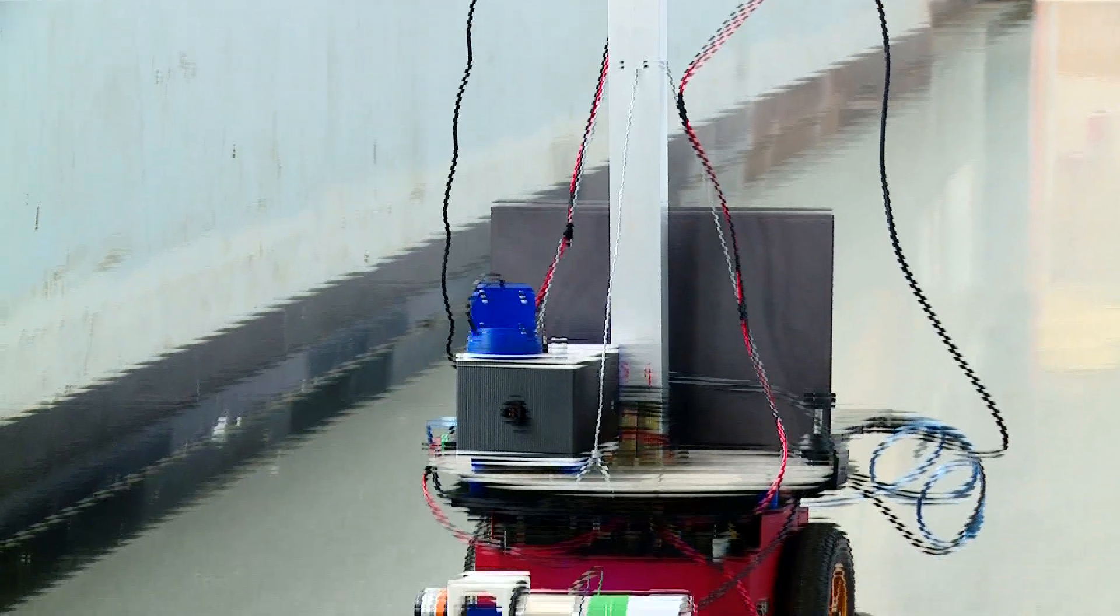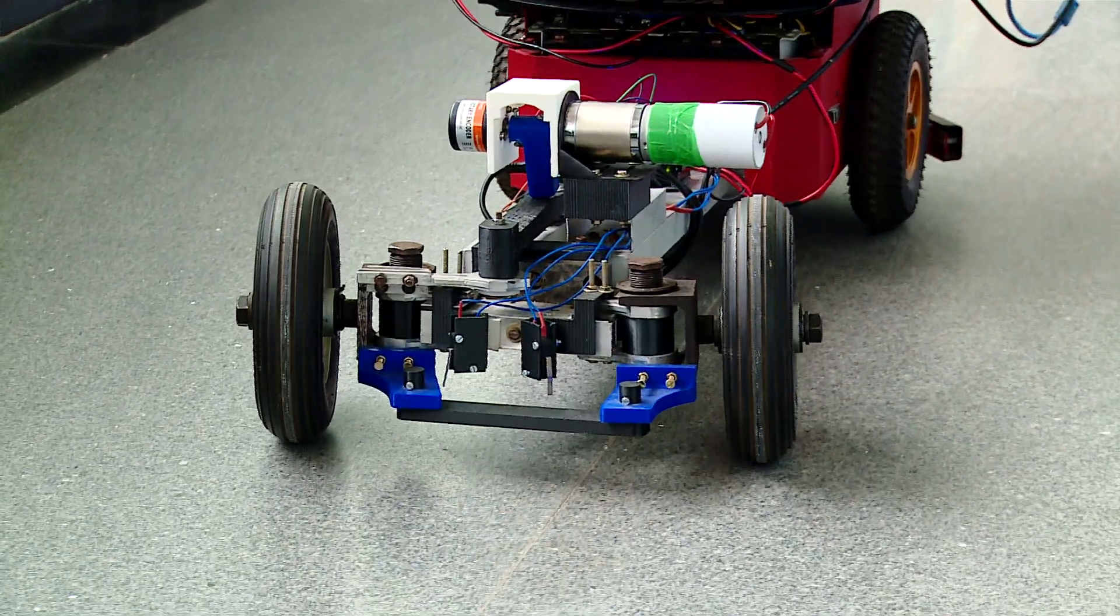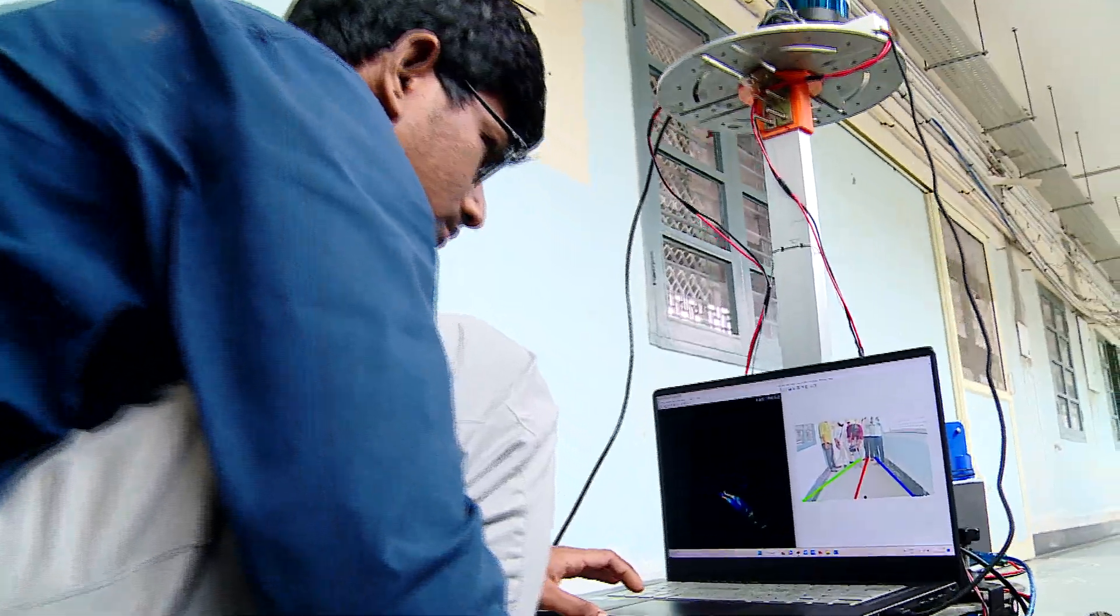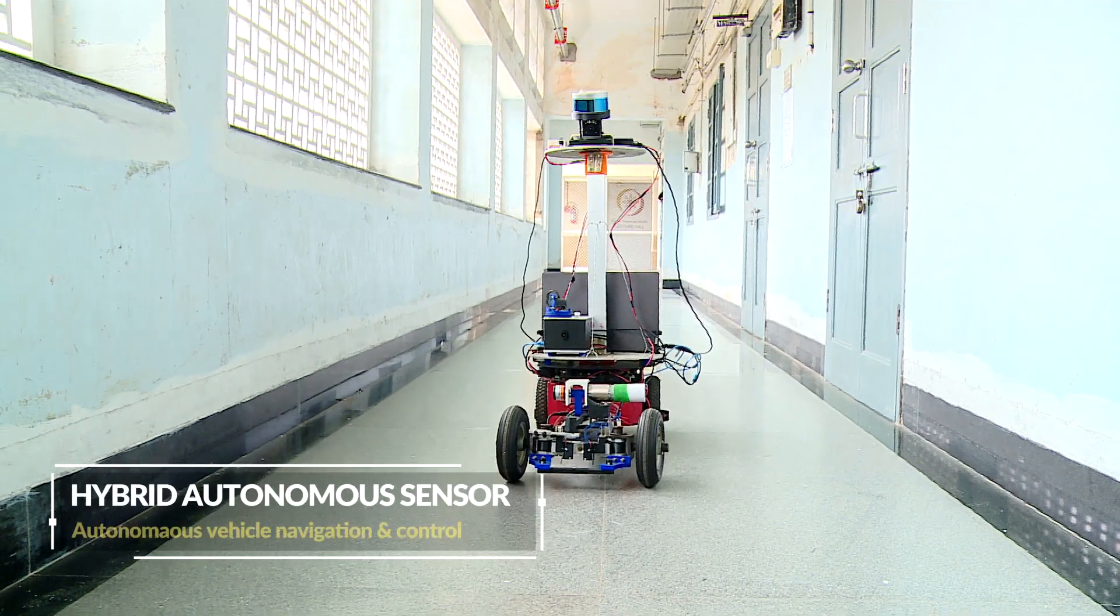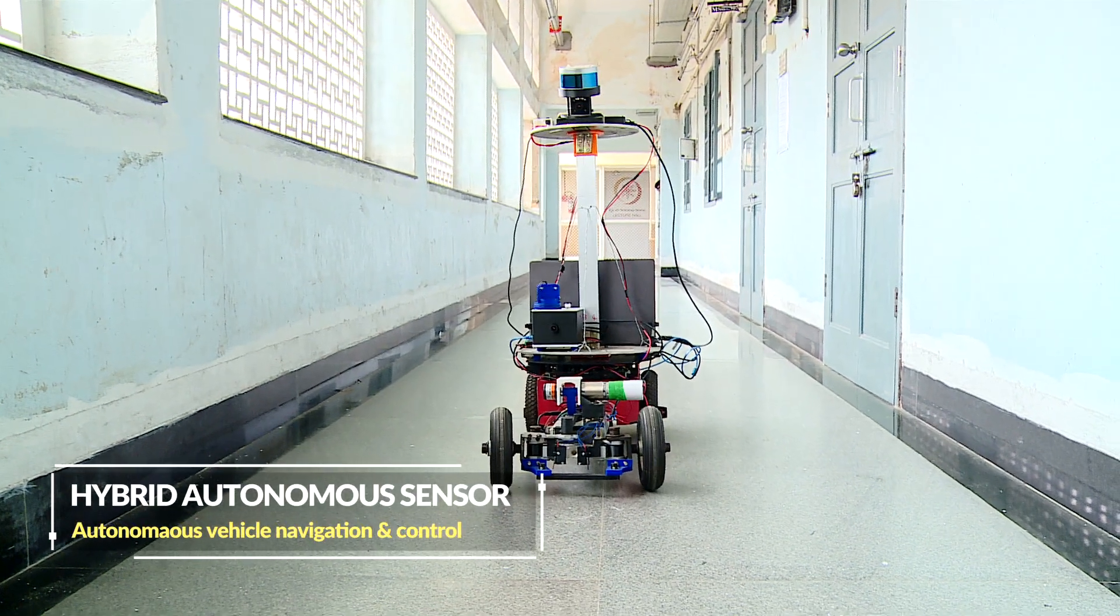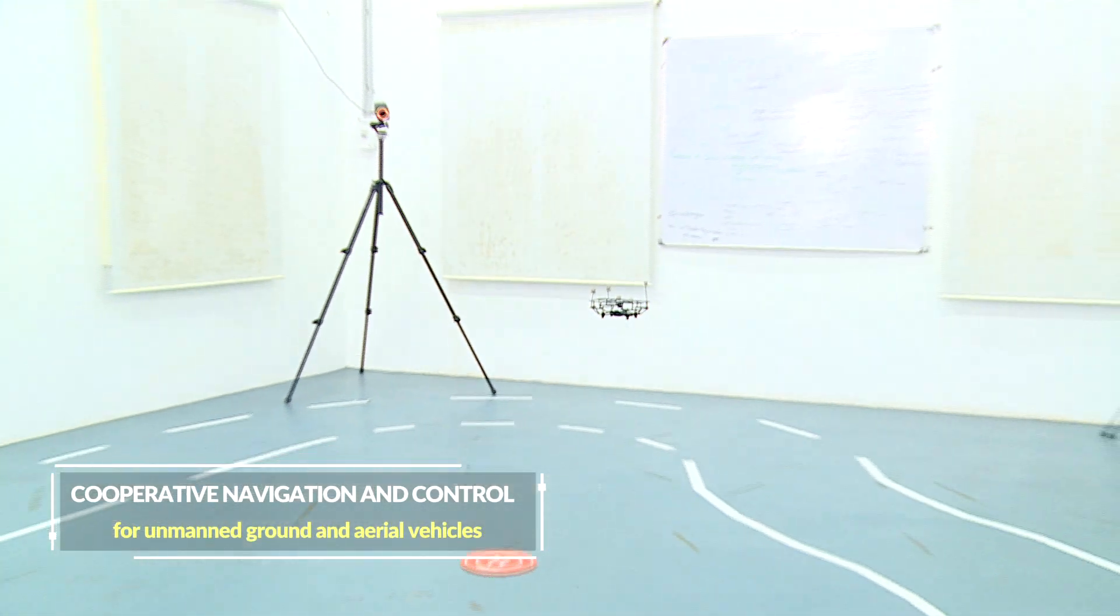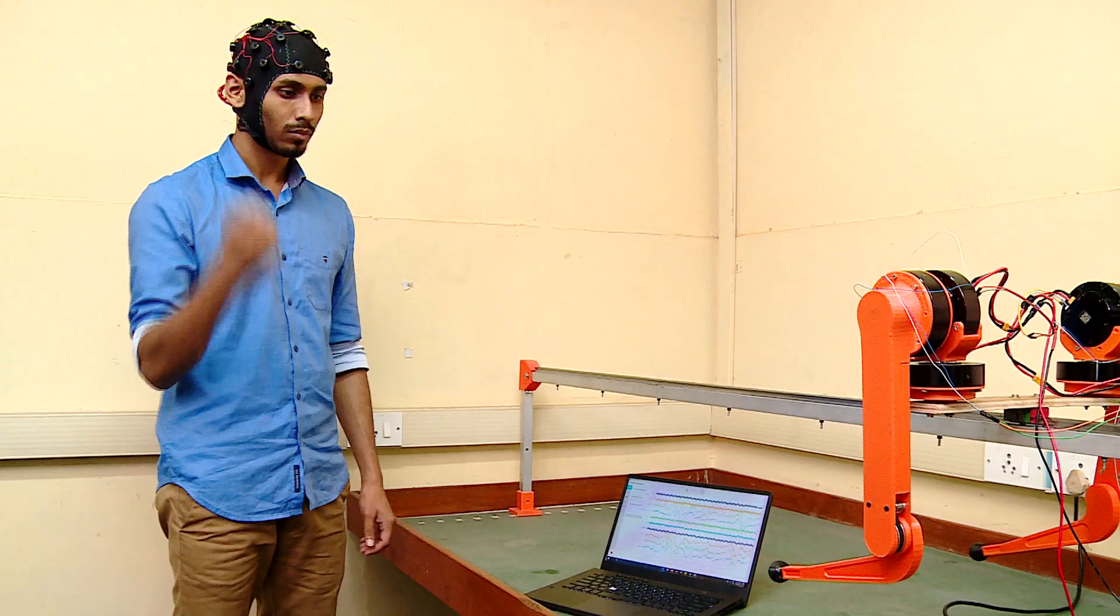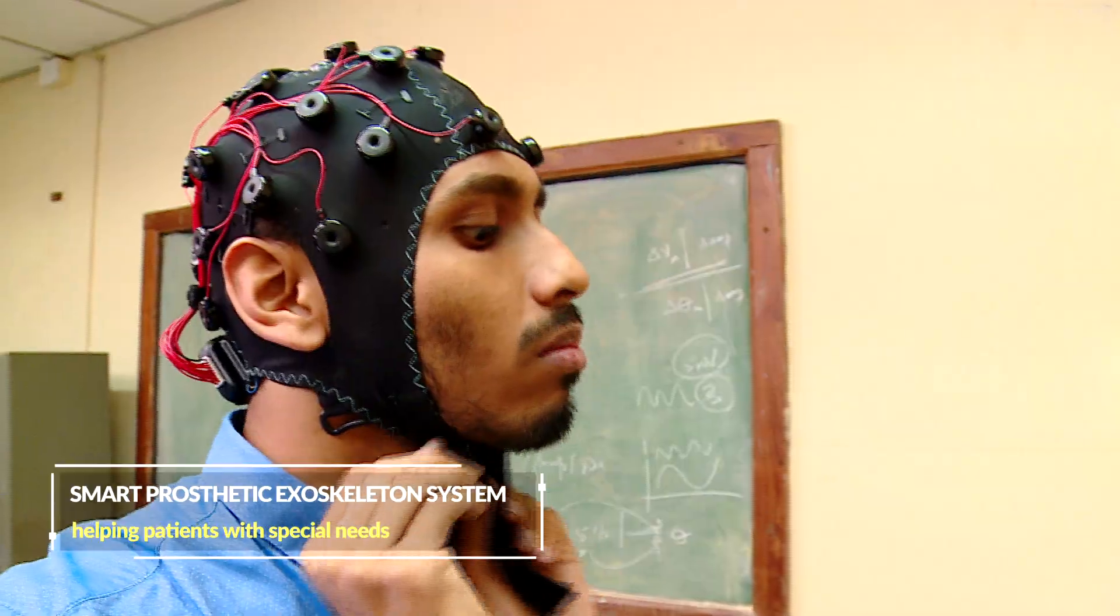The robotics and controls group is actively involved in different levels of robotics and autonomous based research. A few research developments of the group are hybrid autonomous sensor for autonomous vehicle navigation and control, cooperative navigation and control for unmanned ground and aerial vehicles, and smart prosthetic exoskeleton system for helping patients with special needs.